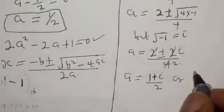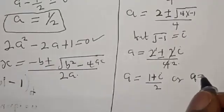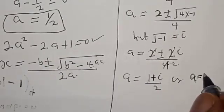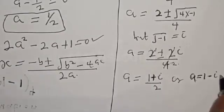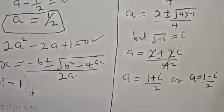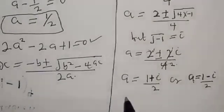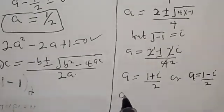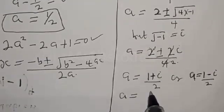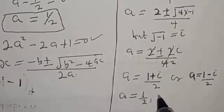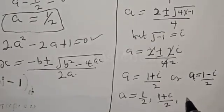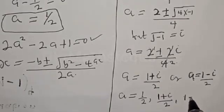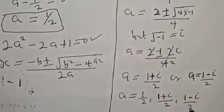So A equals 1 plus i over 2 or A equals 1 minus i over 2. Therefore, the roots of the equation are A equal to 1 over 2, A equal to 1 plus i over 2, and A equal to 1 minus i over 2.